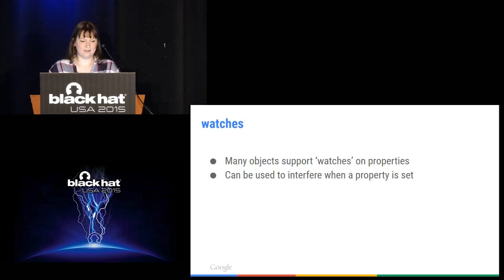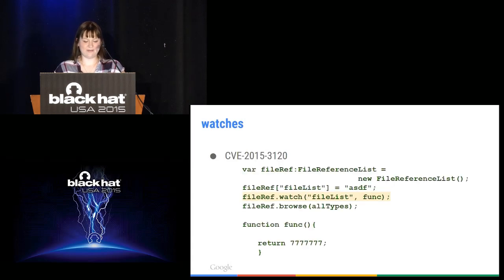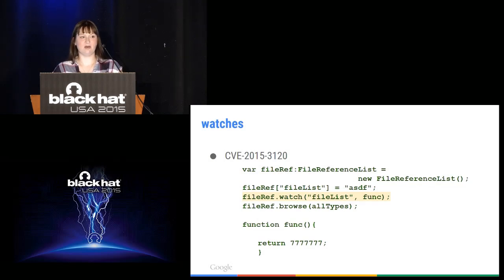Another interesting function that can cause redefinition issues is watches. These can be used to interfere, especially when a property is set inside a native function. With a watch, you specify a property of an object and a function; every time that property is set, the function gets called. You then have the opportunity to either return what it was set to — leaving the property unchanged — or return something different, changing what the property got set to.